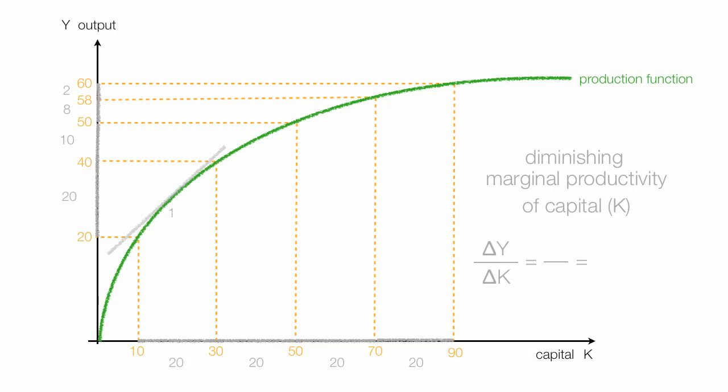Now I can also calculate the slope of the tangent line in other places along the curve, such as here. So now we have the change in y, which is 10, which is 50 minus 40, divided by the change in capital, which is 20. In this case, it's 50 minus 30. This is equal to 1 divided by 2, which is 1 half. And this is the same as 0.5. I'll put 0.5 right there.